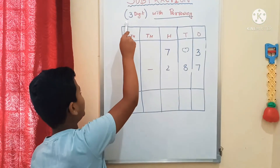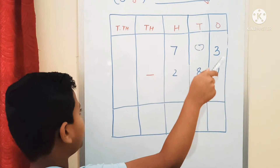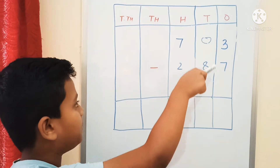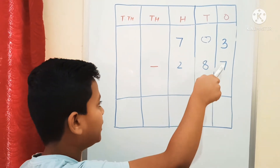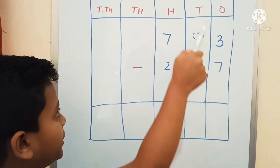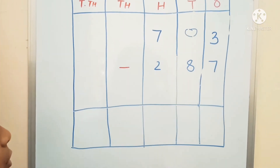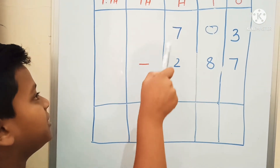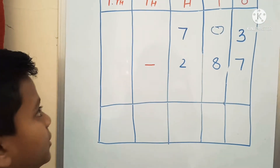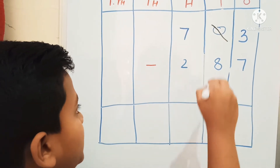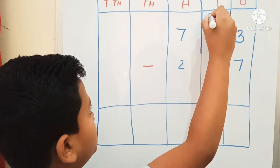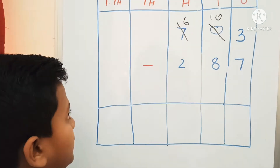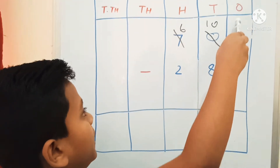Now let's do 3-digit subtraction. 703 minus 287. We will start with the 1's place. We cannot subtract 7 from 3. We will go to the 10th place, but here we have 0, so we can't borrow. We will go to the 100th place. In the 100th place, we have 7. So we will borrow 10 tenths. This 0 is now 10, and this 7 is now 6. Now let's start again from the 1's place.